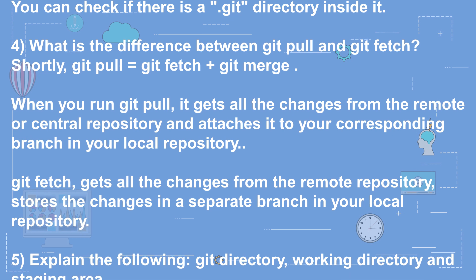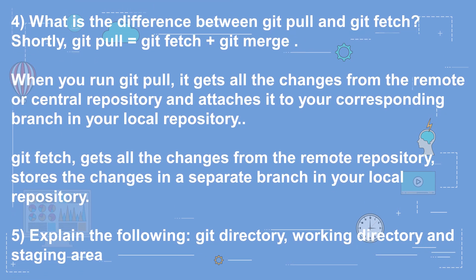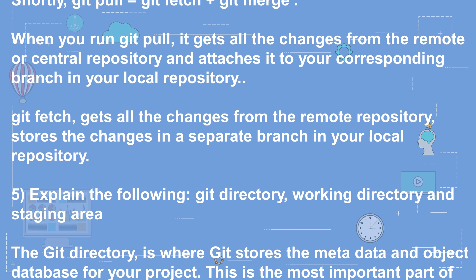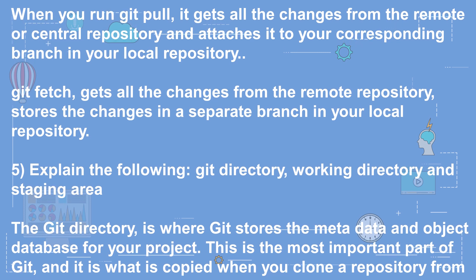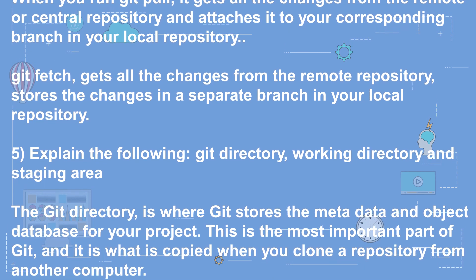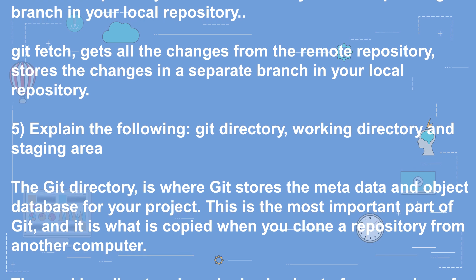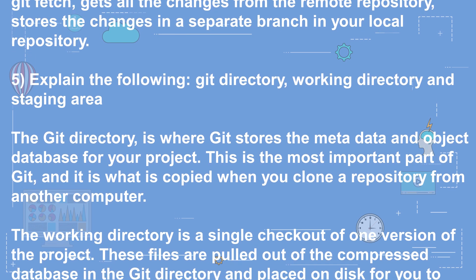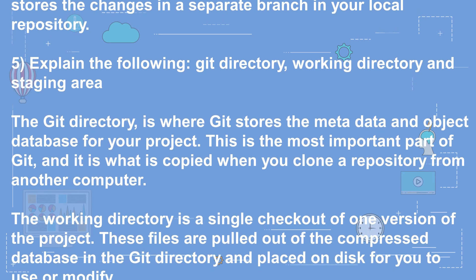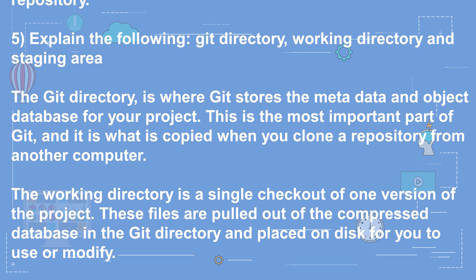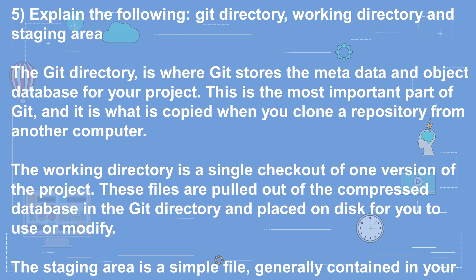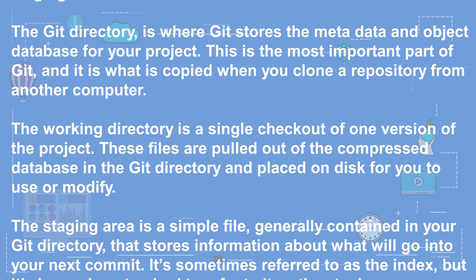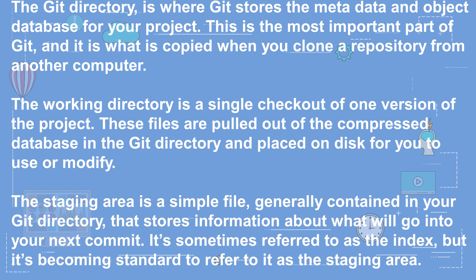Question 5: Explain the git directory, working directory, and staging area. The git directory is where git stores the metadata and object database for your project — it is copied when you clone a repository. The working directory is a single checkout of one version of the project. The staging area is a simple file in your git directory that stores information about what will go into your next commit — sometimes referred to as the index.